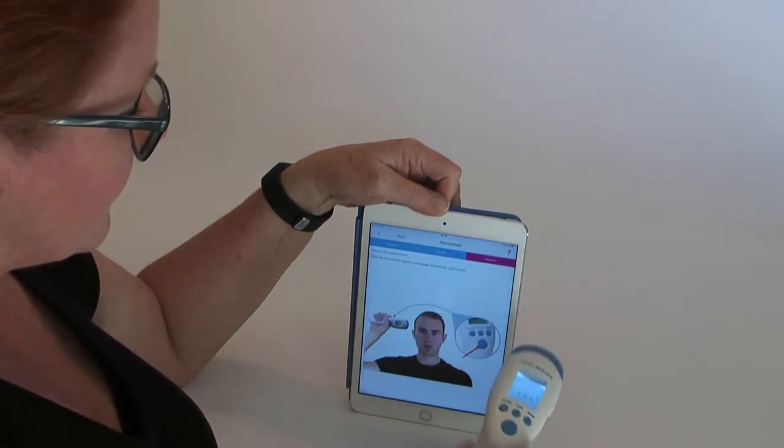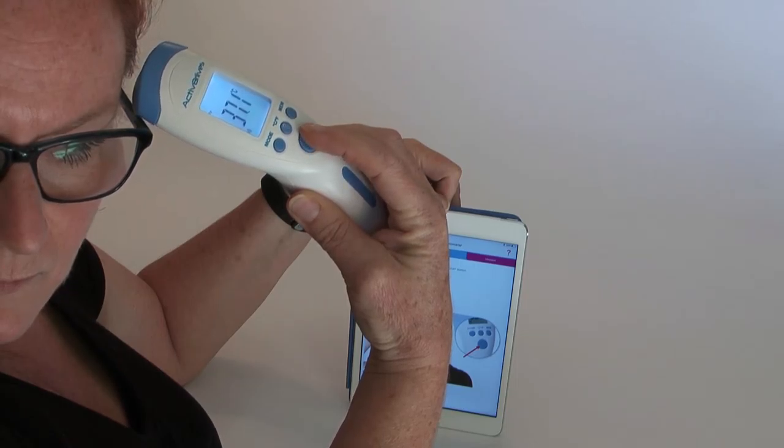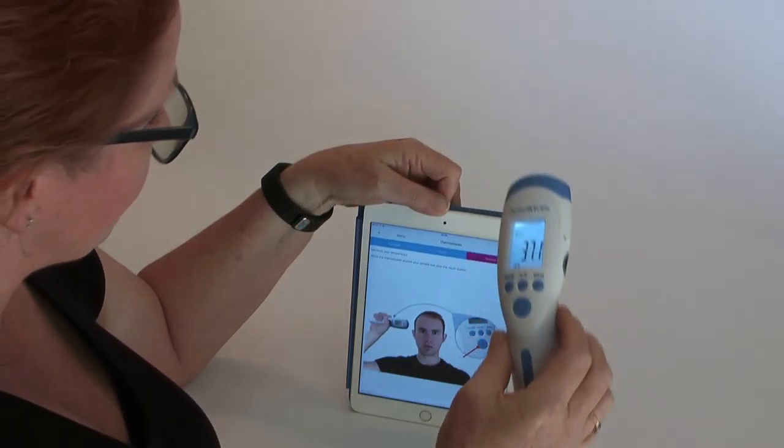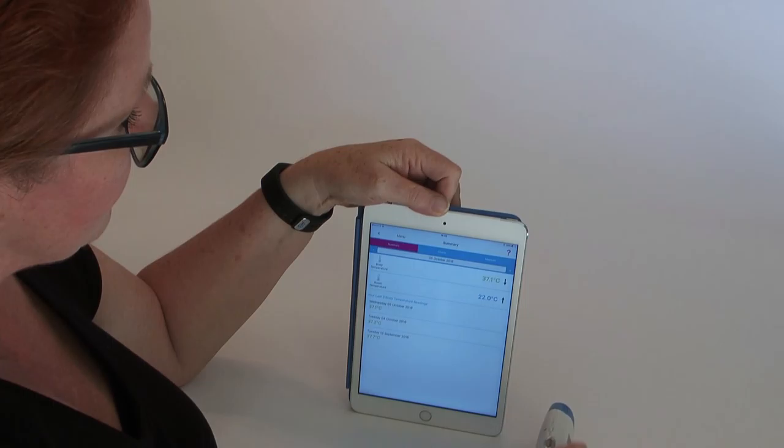Then to take a measurement, simply place it at the temple and press the large button, and this will take the temperature and will be revealed both on the device and the app.